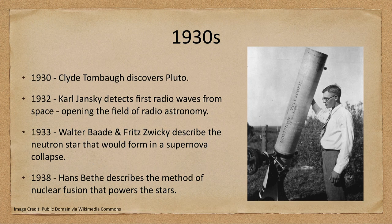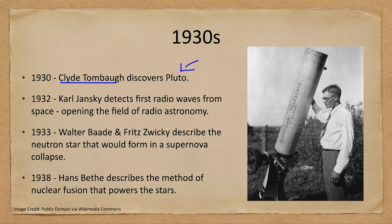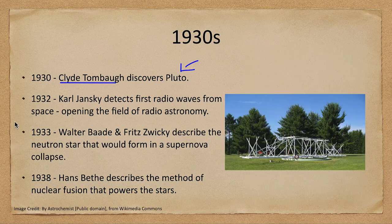Moving into the 1930s, we see Clyde Tombaugh and the discovery of Pluto, now one of five dwarf planets known in the solar system — it was the last time a planet had been discovered, and of course it is no longer classified as a planet. A few years later, Karl Jansky built the first radio telescope, detecting radio waves from space and opening up the field of radio astronomy.